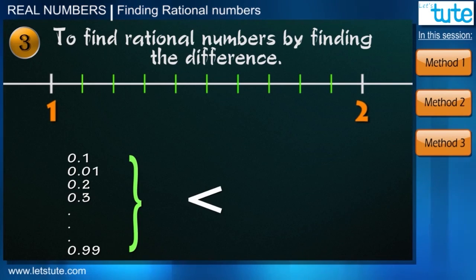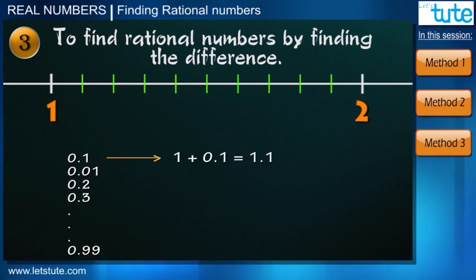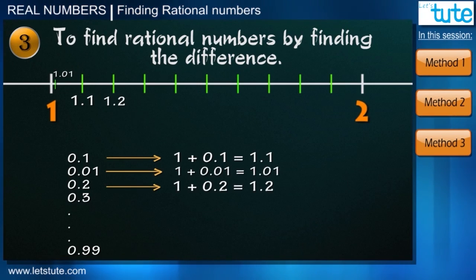Let's say for example the numbers 0.1, 0.01, 0.2, 0.3 and up to 0.99 they are all less than 1. Therefore we say that the numbers 1 plus 0.1 that is 1.1 lies between 1 and 2. Same way 1 plus 0.2 that is 1.2, 1.3, 1.4 they are all lie between 1 and 2. So I hope you have understood everything we have learned today.